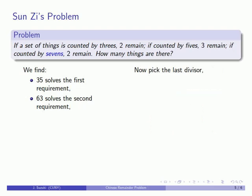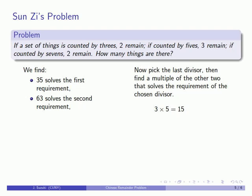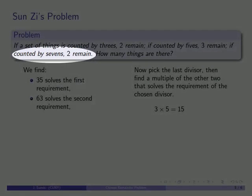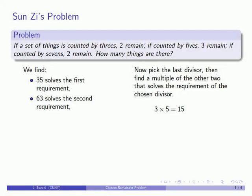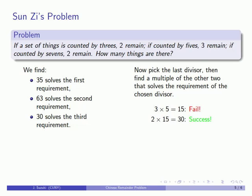Now for the last divisor, seven. I want to find a multiple of the other two divisors, three and five, which is fifteen. I want a multiple of fifteen that leaves a remainder of two when divided by seven. Fifteen doesn't work. Two times fifteen is thirty, which does work because thirty has remainder two when divided by seven. So thirty solves the third requirement.